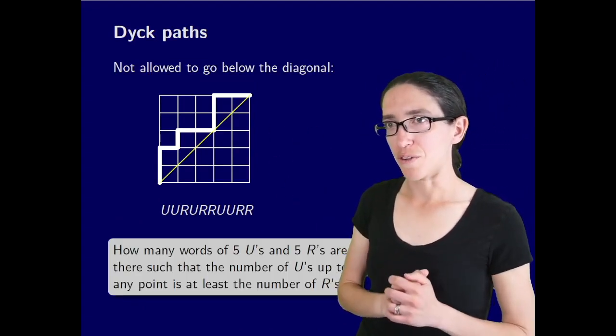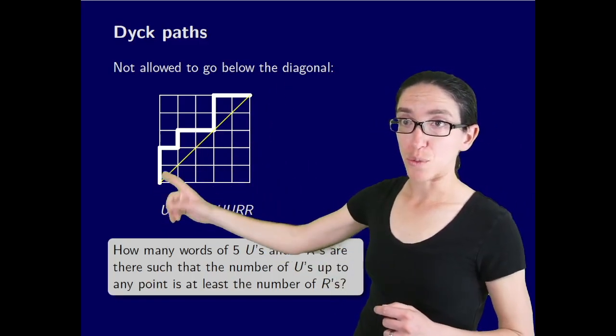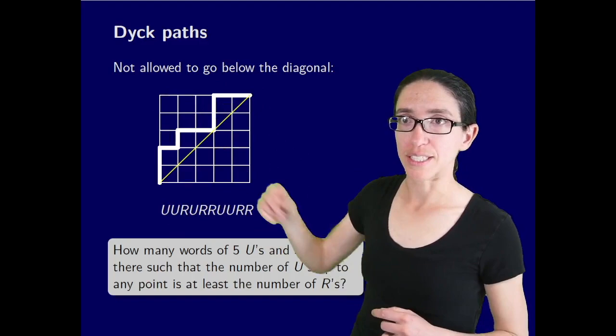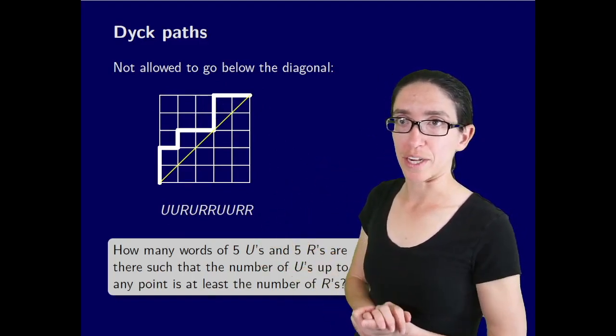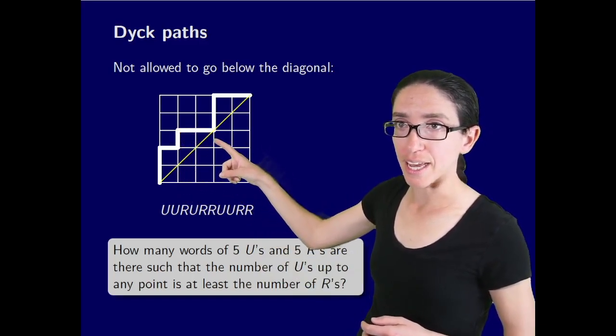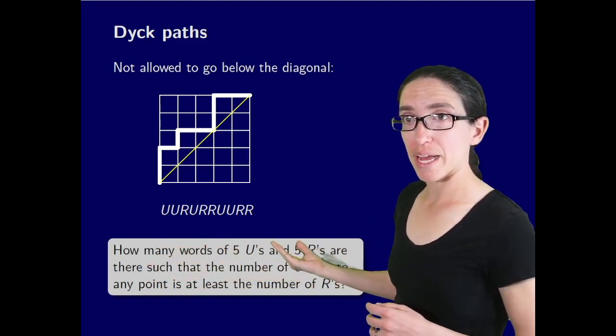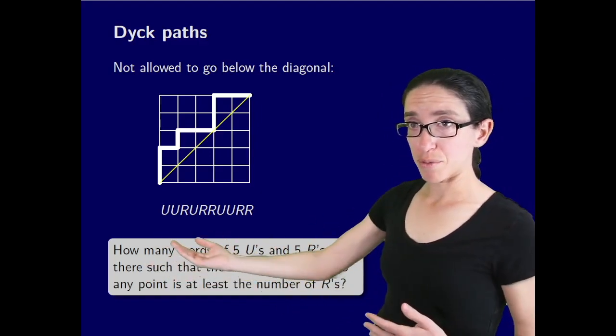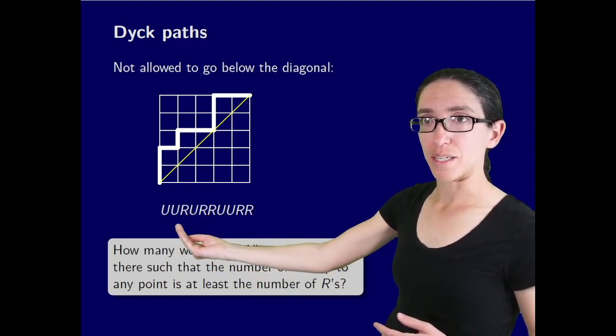Now let's consider the following variant. Say you're not allowed to go below the main diagonal. So you have a square grid, five by five in this case. You want your path to still go up and right and it can bump into this diagonal but it can't cross over below it. So now you still have up and right paths but they have the property that the number of U's you read at each step up to each point outweighs the number of R's.